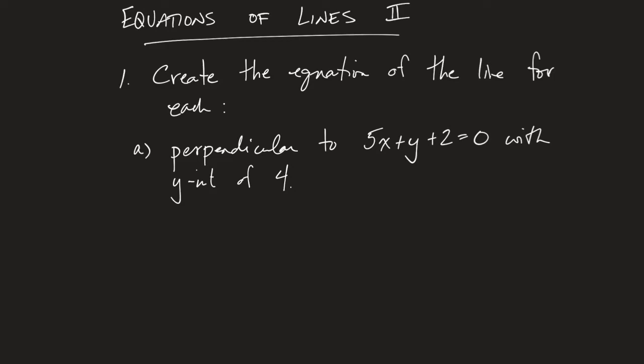So let's copy down that problem and try to build that equation. Let's pause the video now. Okay, we should be back. When we take a look, we know that in order to build the equation of the line, we need slope and one point. And if we're fortunate enough, then that information is given to us — well, not quite.